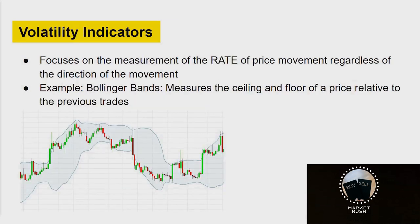Volatility indicators focus on the measurement of the rate of price movement — not the direction, but how volatile the stock is. An example of this is Bollinger Bands, which measure the ceiling and floor of a price relative to previous trades. When the price goes outside of the Bollinger Bands, that's an indicator of what the stock price is about to do.